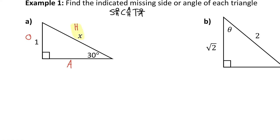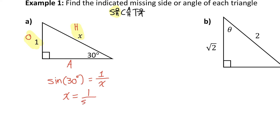We're trying to find the hypotenuse — solving for X. The side that we know is opposite, so we'll use the ratio that involves opposite and hypotenuse, which is sine. So I can say that sine of 30 degrees equals the opposite side, which is 1, divided by the hypotenuse, which is X. To isolate X, it'll switch spots with the sine 30: X equals 1 divided by sine of 30 degrees. If I evaluate that, I'll get 2.